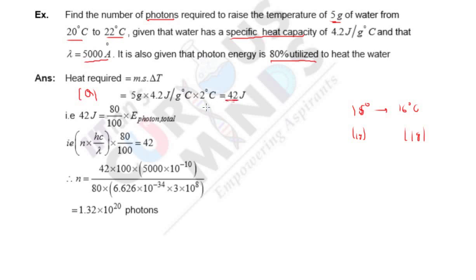Now this 42 Joules should be 80% of the energy given by photons, right? Why 80%? Because 80% is utilized to heat the water. So 80 upon 100 times E of photon.